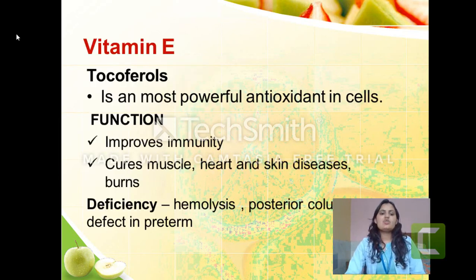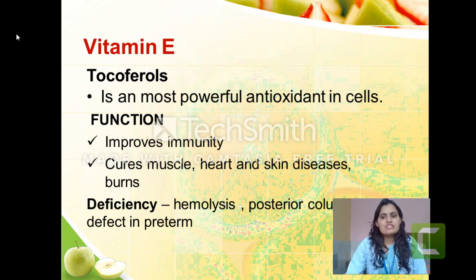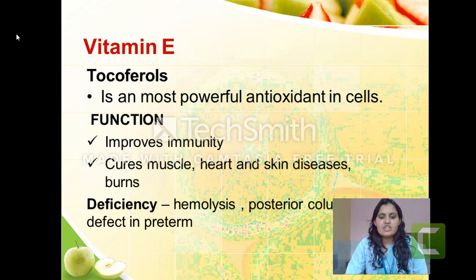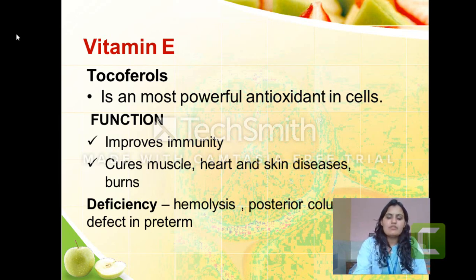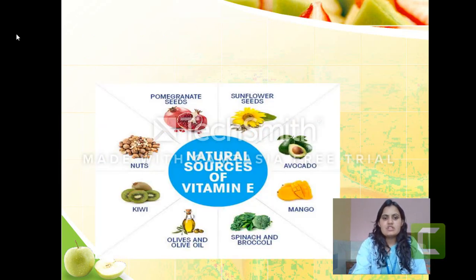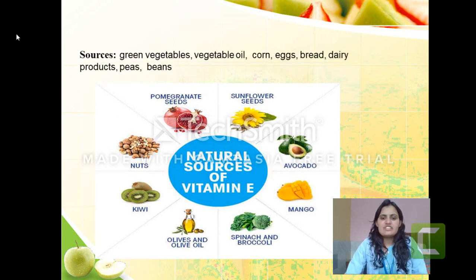The next vitamin is vitamin E — tocopherol. Vitamin E is one of the most powerful antioxidants in our cells, required to neutralize free radicals. Its functions include improving immunity and aiding in muscle disorders, skin diseases, and burns. Its deficiency is rare, but if deficient it can lead to haemolysis and posterior column defects. Rich sources include green vegetables, vegetable oil, corn, eggs, bread, dairy products, peas, and beans.